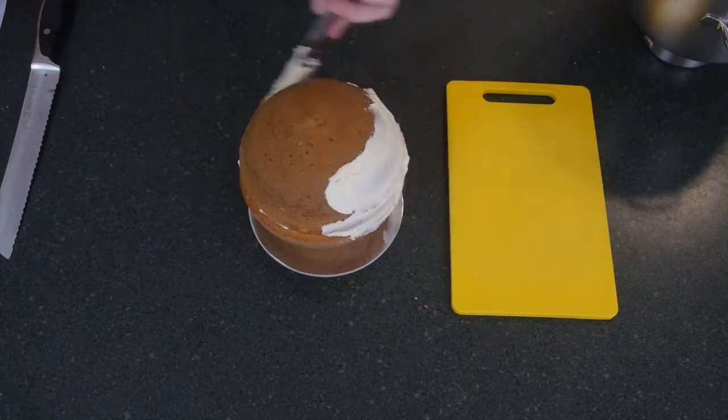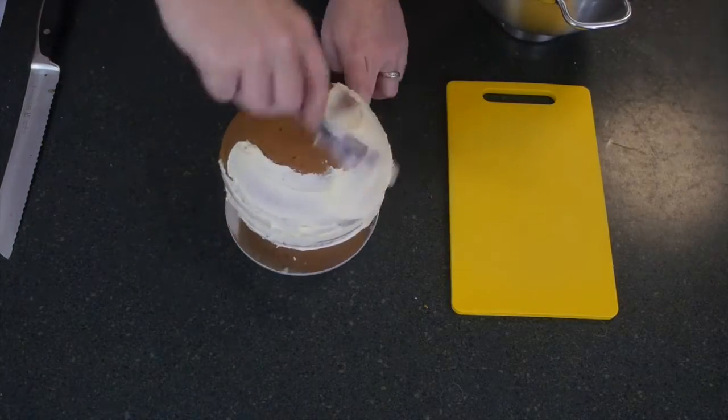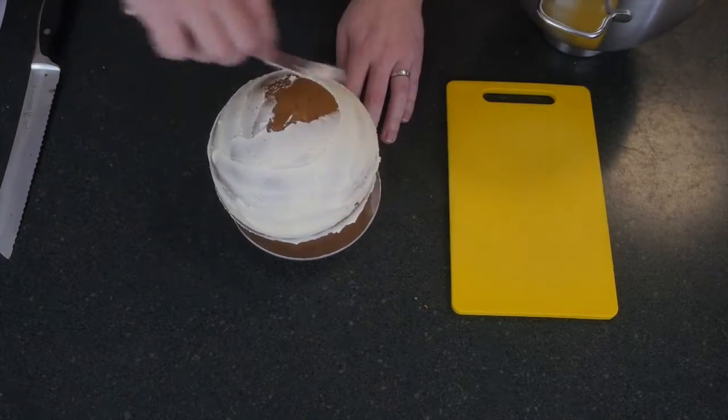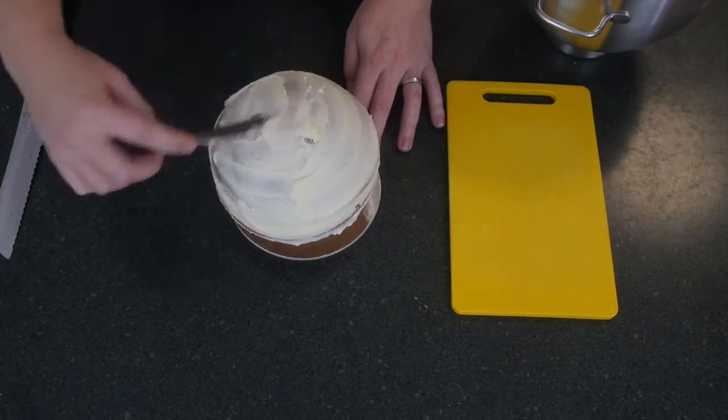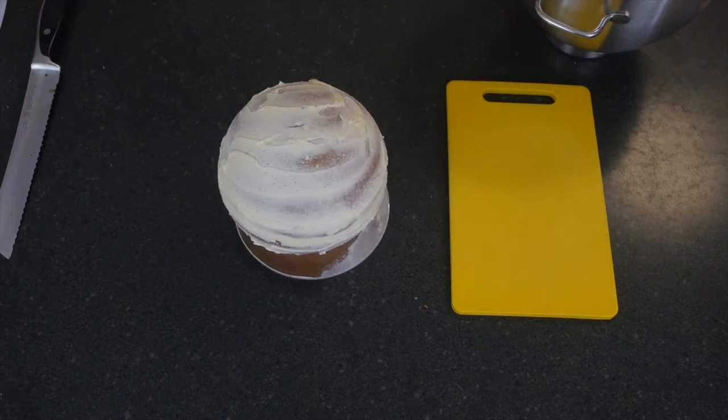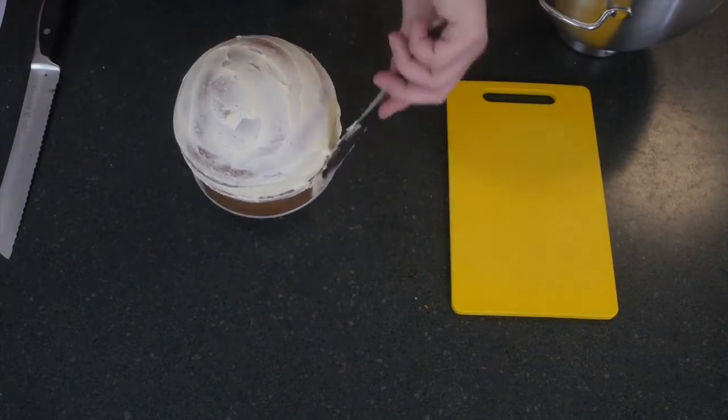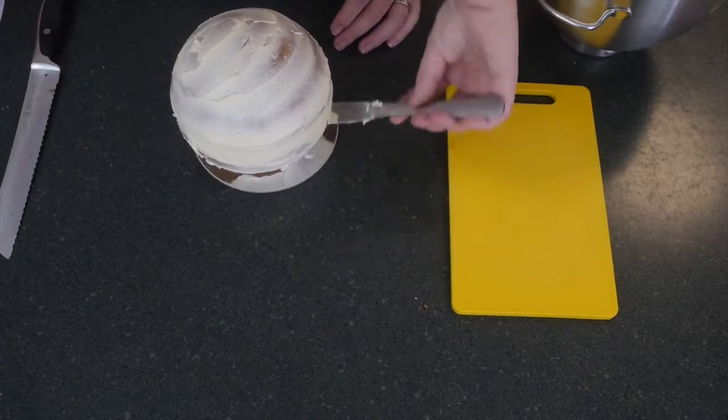And then I'm going to crumb coat the entire cake. So make sure you press all of that icing into the join so that you have one lovely nice smooth ball. Get your crumb coat all the way over that cake and as smooth as possible, and then pop that in the fridge to set before we cover it with some fondant.